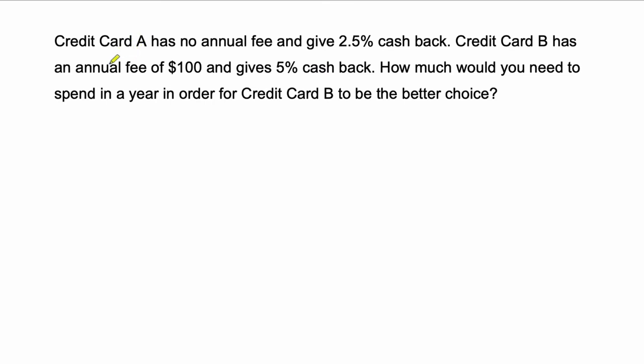The idea is that if you have choices with your credit, you know how to figure out what the best choice would be for you. So let's do a simple case. We have one credit card, credit card A. It has no annual fee, and it gives 2.5% cash back. It's a good deal.